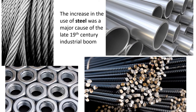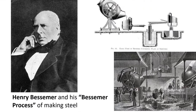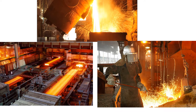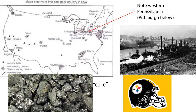The increase in the use of steel was a major cause of the late 19th century industrial boom. People knew how to make steel from iron — steel is a stronger metal — but for a long time it was a long and laborious process. It was in the 19th century when Henry Bessemer invented a process of making iron molten and then burning out the impurities, which made steel. Steel mills exploded throughout areas of America where there was a lot of iron, such as western Pennsylvania and the Pittsburgh area, which had materials like coke, a great energy source to make the steel.